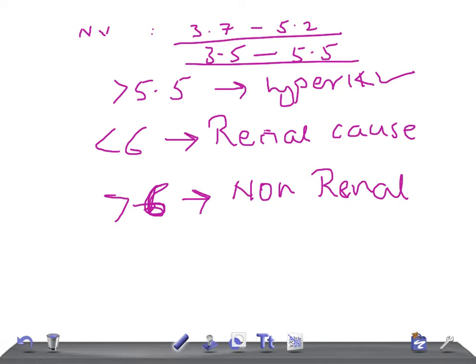If less than 6 renal cause is suspected, then you have to do two tests: serum aldosterone levels and renin levels.